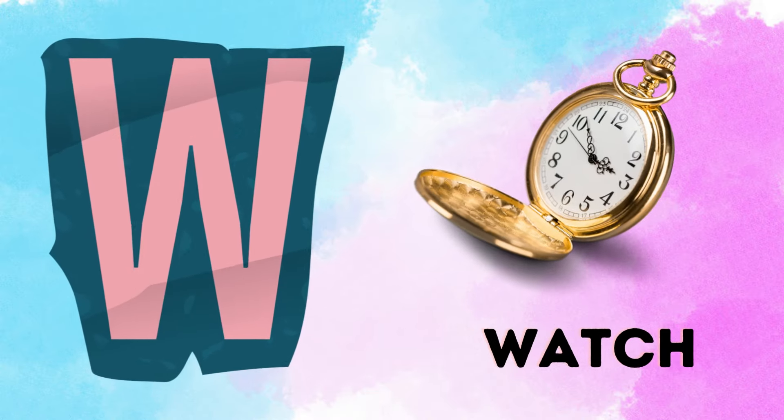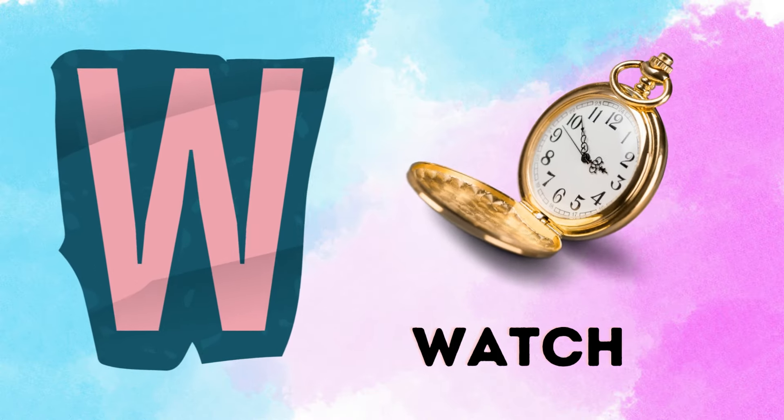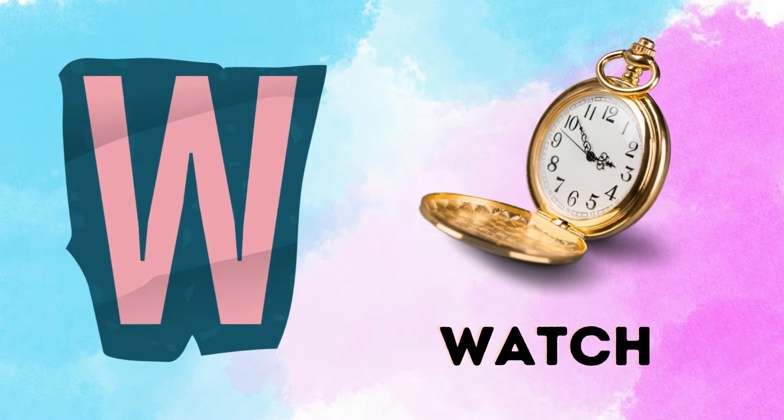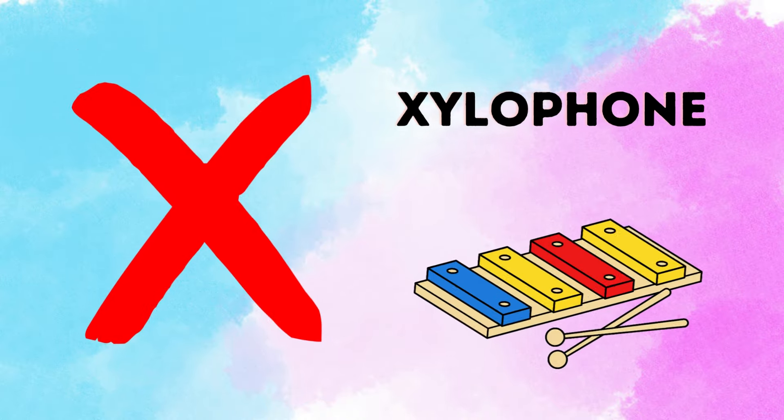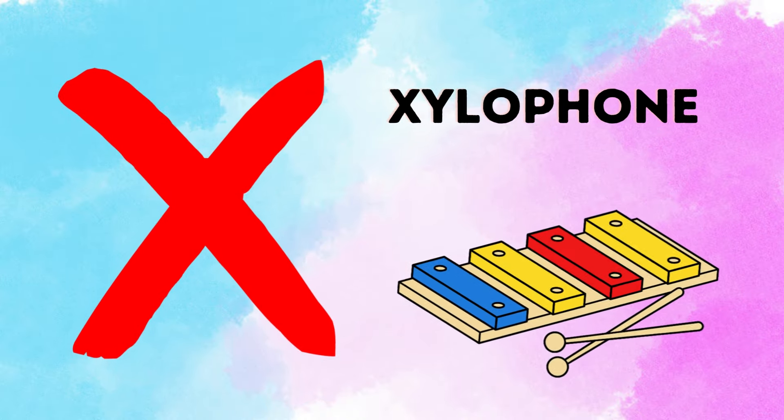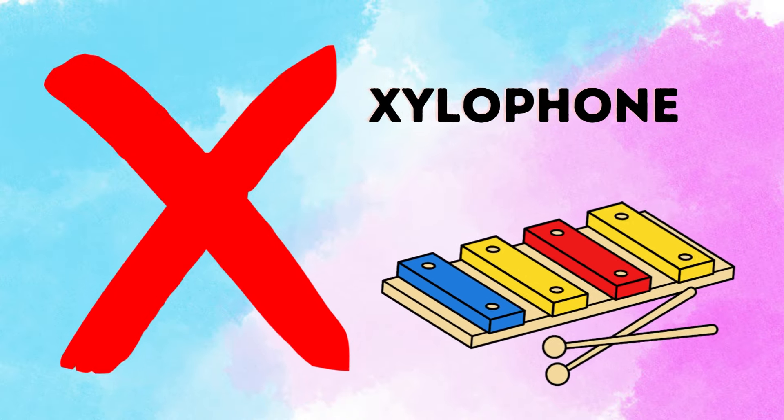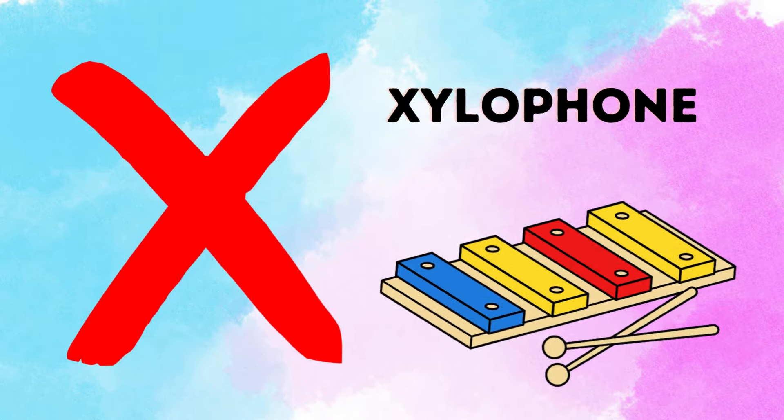W is for watch, w-w-watch. X is for xylophone, z-z-xylophone.